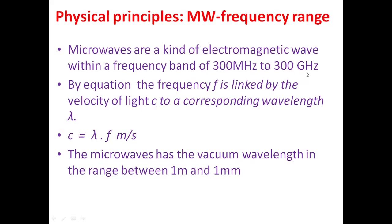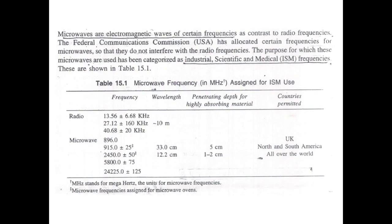From megahertz to gigahertz is a factor of 10³, as is the difference between 1 millimeter and 1 meter. Due to this wide range, classification has been done. Out of the five classified frequencies, only two — 915 megahertz and 2450 megahertz — are used for food processing. Domestic microwave ovens use 2450 megahertz, while industrial purposes use 915 megahertz.